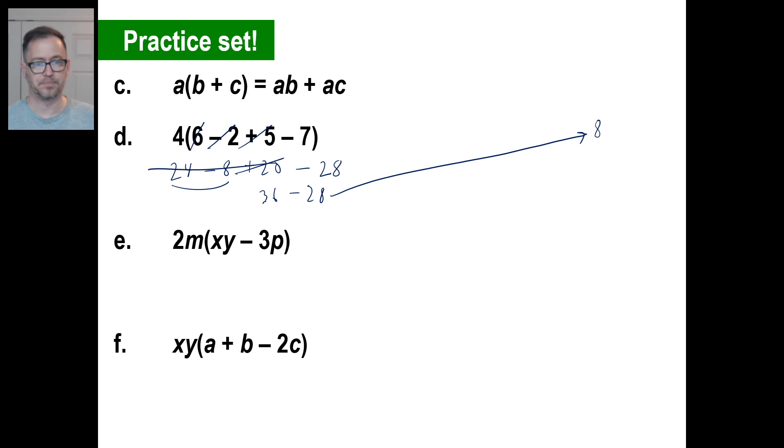Pause it and try E. Let's go ahead and just do one at a time. 2m times xy is 2mxy. 2m times negative 3p, well, a positive times a negative is a negative, so it's a negative. 2 times 3 is 6, and then m times p, just put mp. We're done. That's all you need to do.